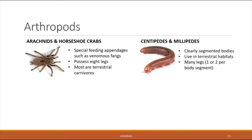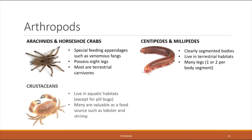There are also centipedes and millipedes, which have very clearly segmented bodies, live on land, and have one or two pairs of legs per body segment. Then there are the crustaceans — most live in aquatic habitats, except for pill bugs (also known as roly-polies or potato bugs), which are the only land-dwelling crustaceans. Crustaceans supply many of our ocean food sources such as lobster, shrimp, and soft shell crab.